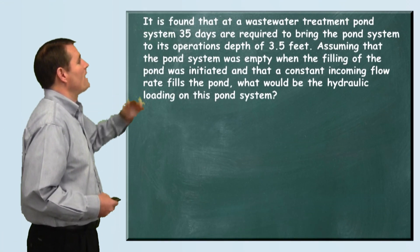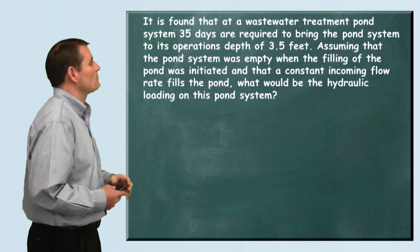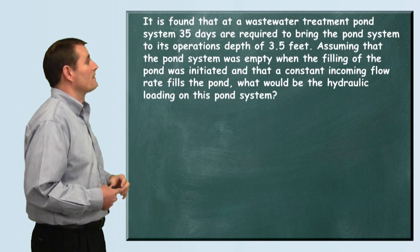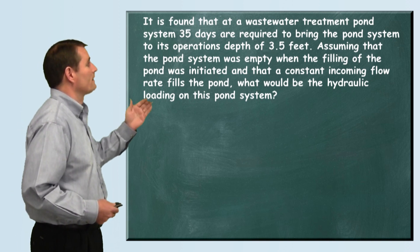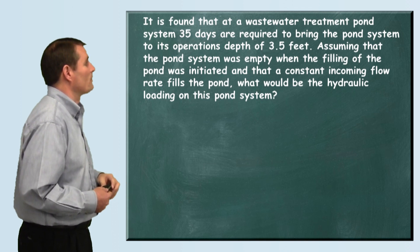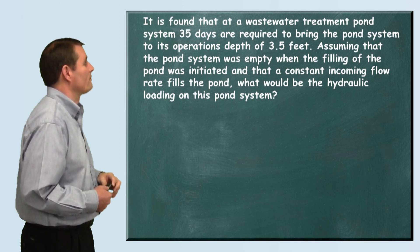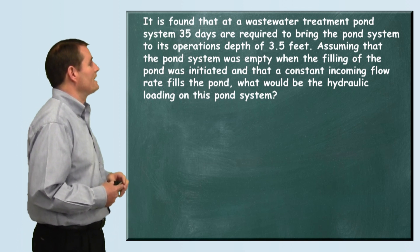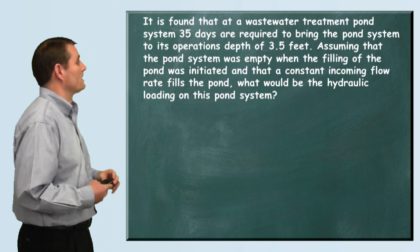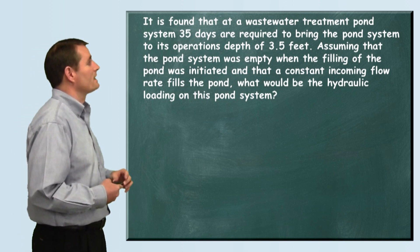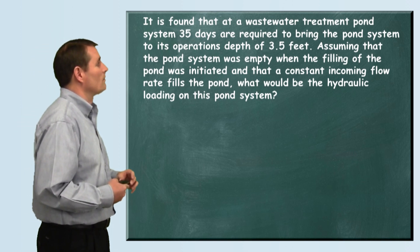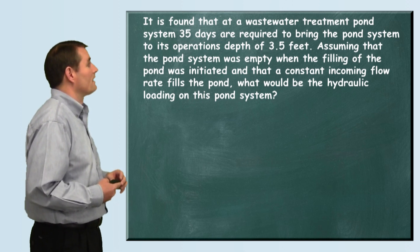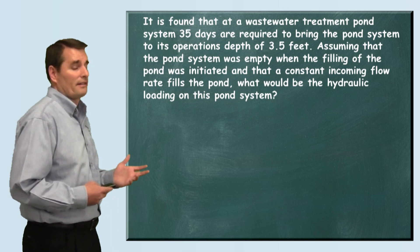The problem reads: it is found that at a wastewater treatment pond system, 35 days are required to bring the pond system to its operation depth of 3.5 feet. Assuming that the pond system was empty when the filling of the pond was initiated, and that a constant incoming flow rate fills the pond, what would be the hydraulic loading on this pond system?